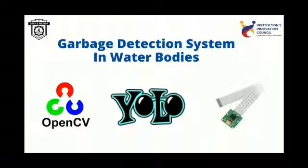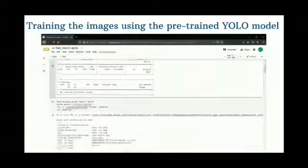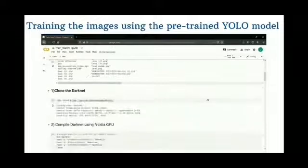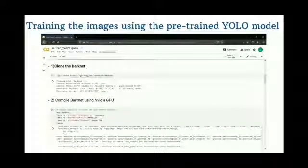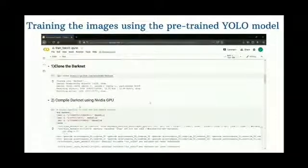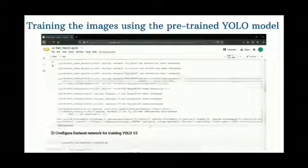For the garbage detection system, a Raspberry Pi, camera, OpenCV, and YOLO model are used. YOLO stands for You Only Look Once. It is a pre-trained CNN model for object detection, which is further trained to detect floating trash in real time.